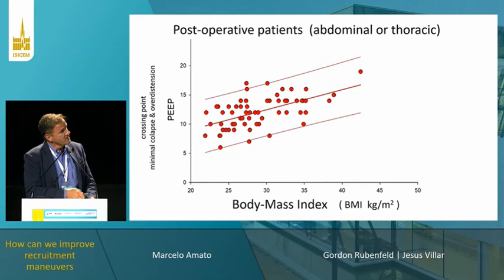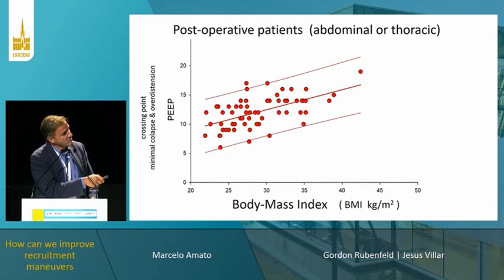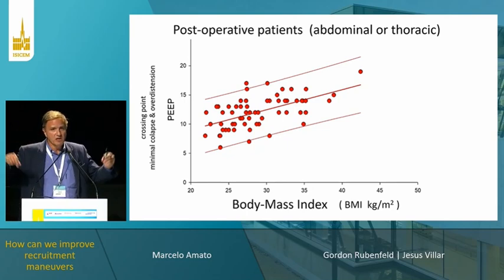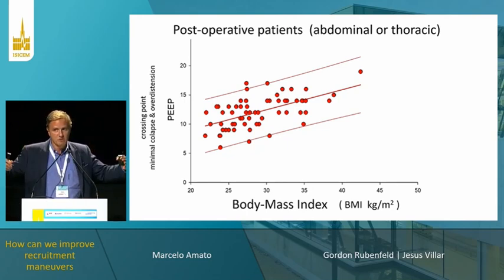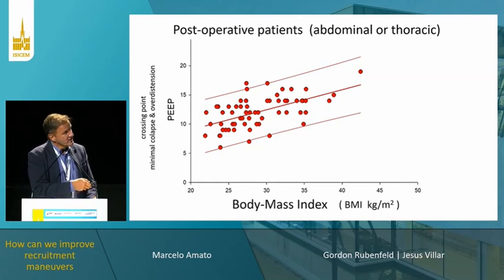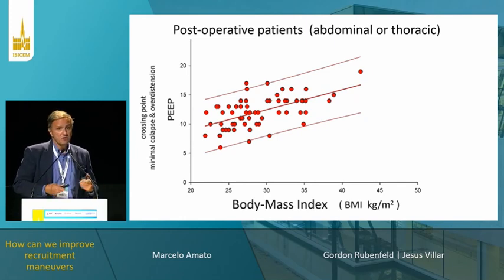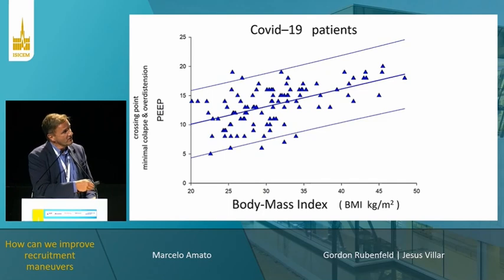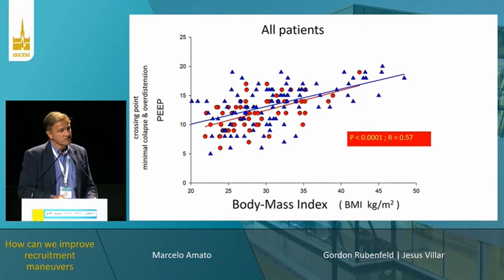Plotting body mass index against the crossing point — the physiological PIP that we mammals love — the correlation is striking. This is from post-operative patients with normal lungs. There is a striking correlation with BMI, which means we should be using more PIP in obese patients. And the COVID patients show almost the same relationship.